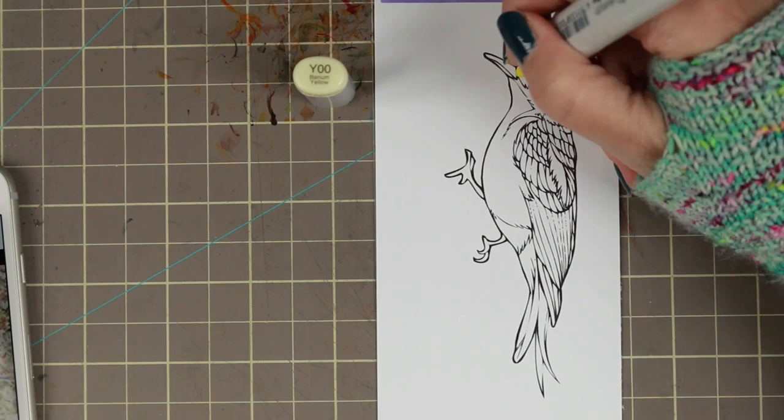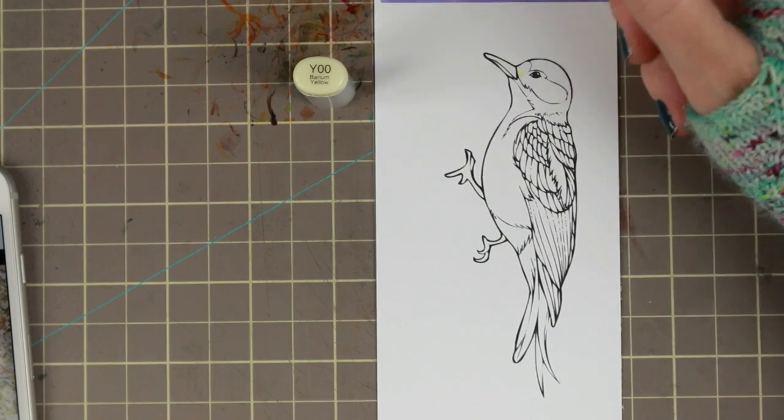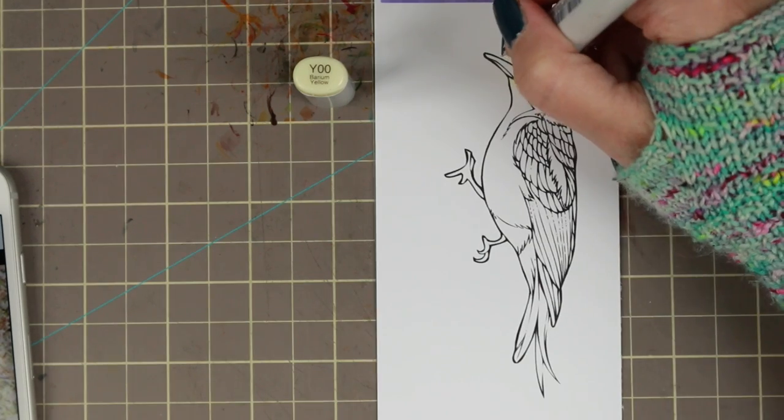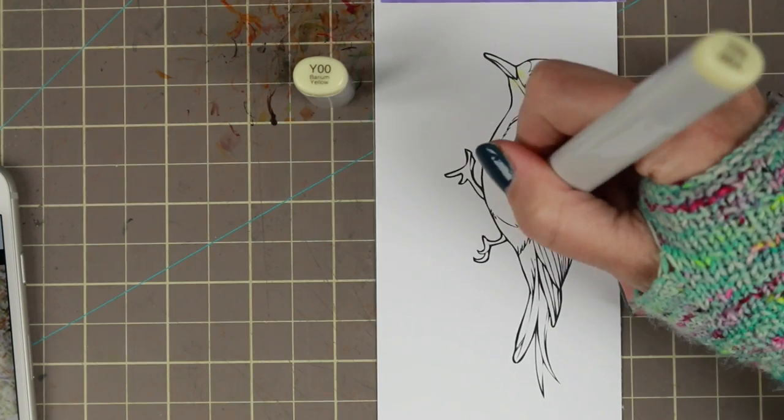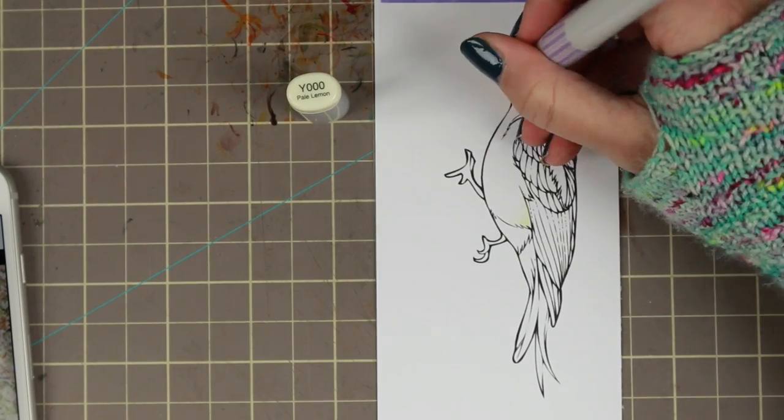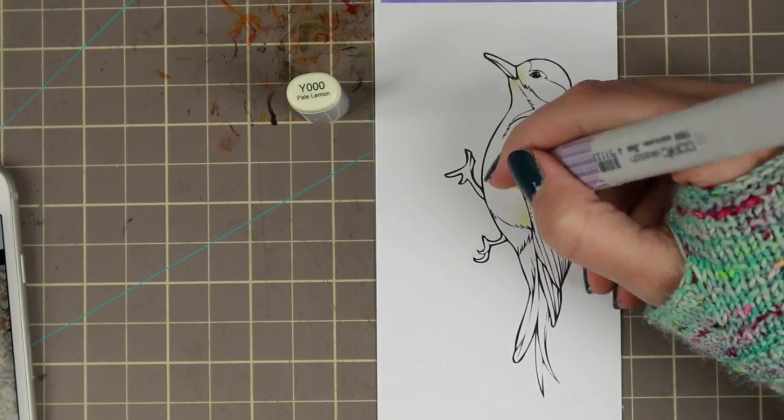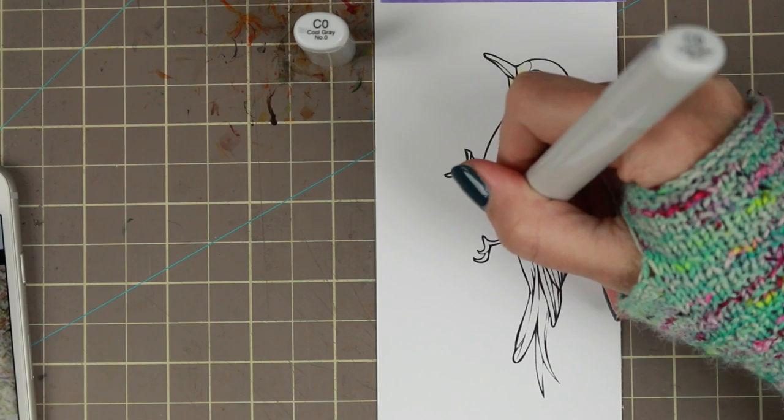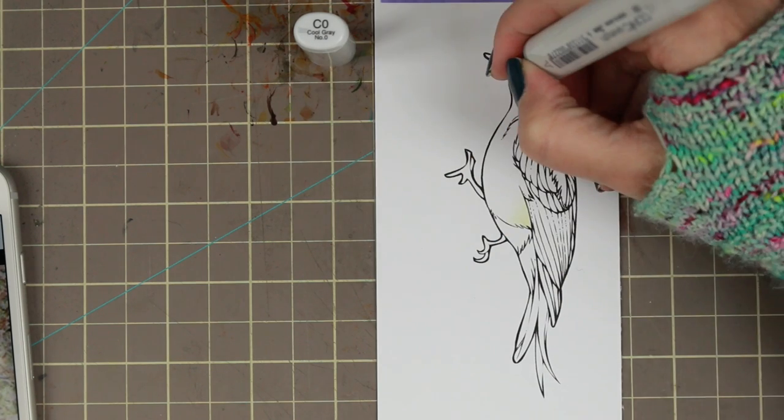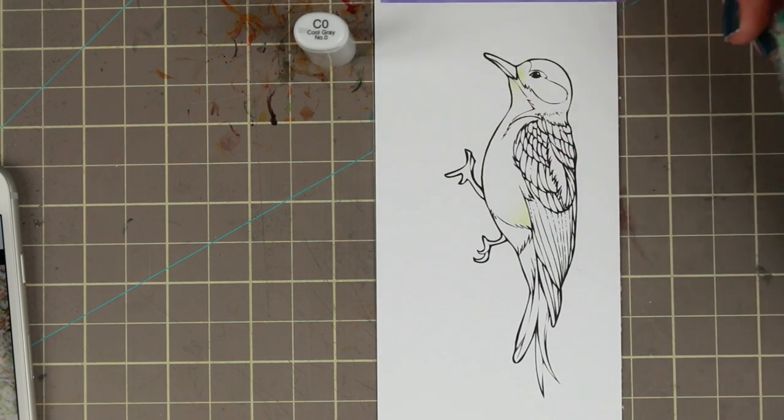For the bird I'm coloring it with Copics as usual, so it's printed on Make It Color blending cardstock and it is a Make It Crafty image. Make It Crafty has a whole bunch of these very adorable birds. I chose the woodpecker because the woodpecker is native to Sweden.